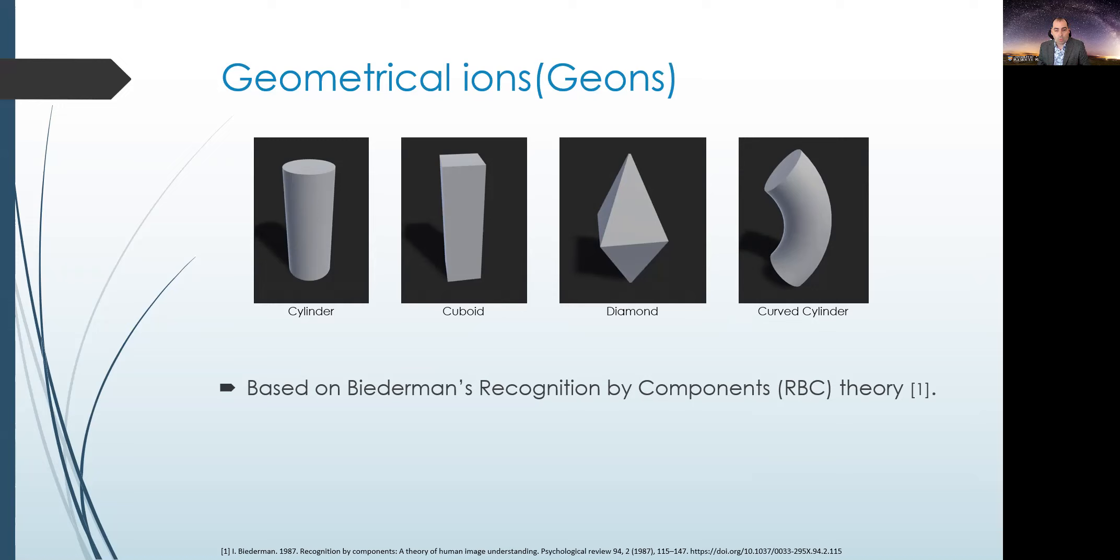And that can be easily recognized as well. For the Geons themselves, we use four attributes to create 36 unique shapes. So, in total, 36 Geons. These attributes are basically edge, symmetry, size, and axis. And they're basically the key to what Geons are.